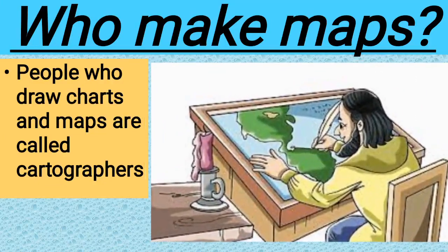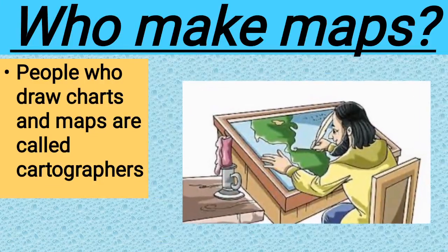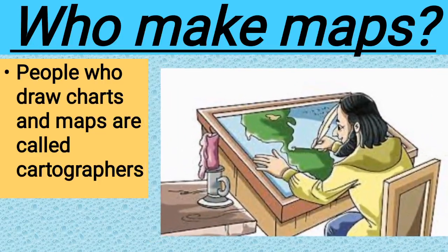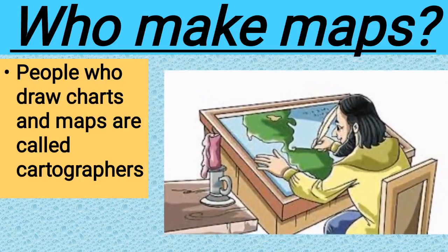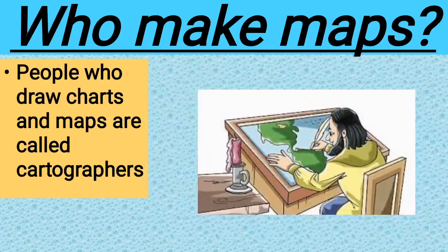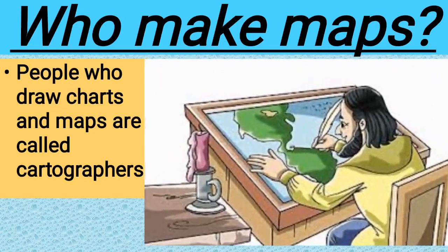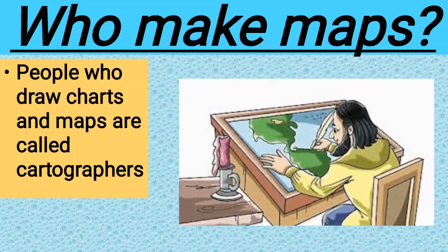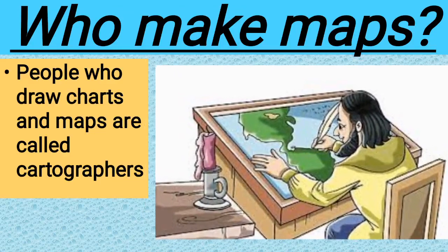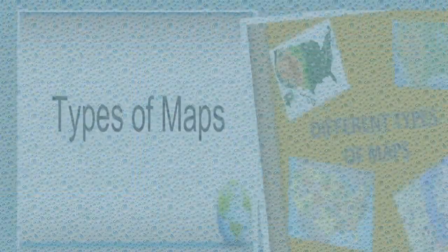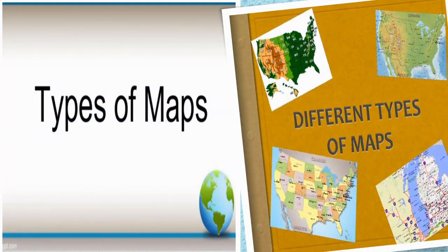Before we discuss the kinds of maps, I want to ask you one question: who makes maps? A person who makes maps is called a cartographer. People who draw charts and make maps are called cartographers. Just as a teacher teaches you, there are different occupations and professions for different people. The people who study and make charts and maps are called cartographers. So the answer is cartographers. Now let's focus on the main topic of today's lecture, which is about the types of maps. Today's main topic is about the different types of maps and their uses. We will discuss three major types of map.